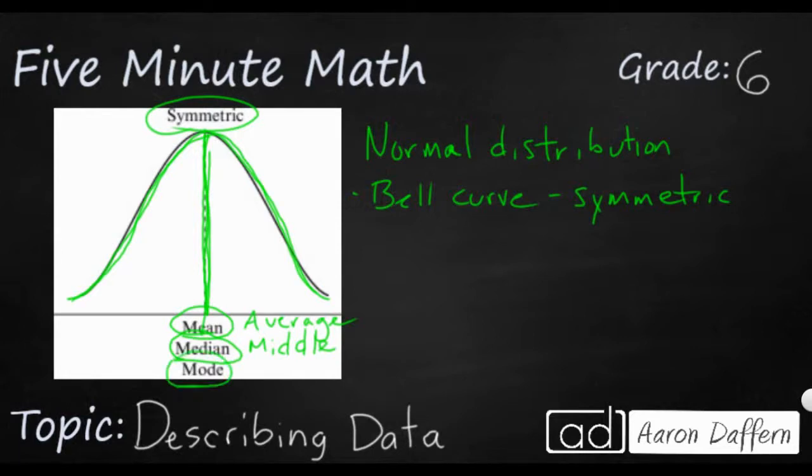And then finally, your mode is the most chosen or it is the piece of data that shows up the most. In this case it's going to be this middle number right here. So only with a perfectly symmetrical data set will you see the mean and the median and the mode all together.